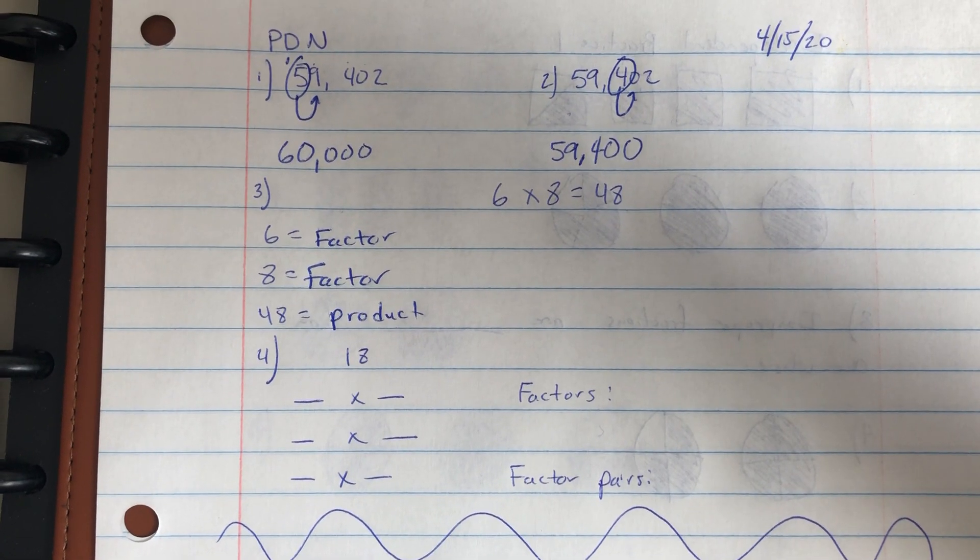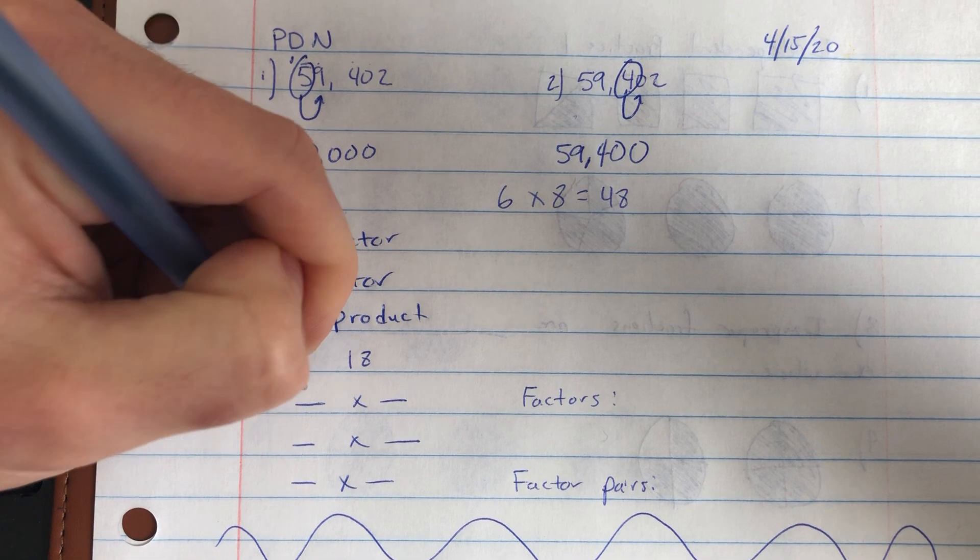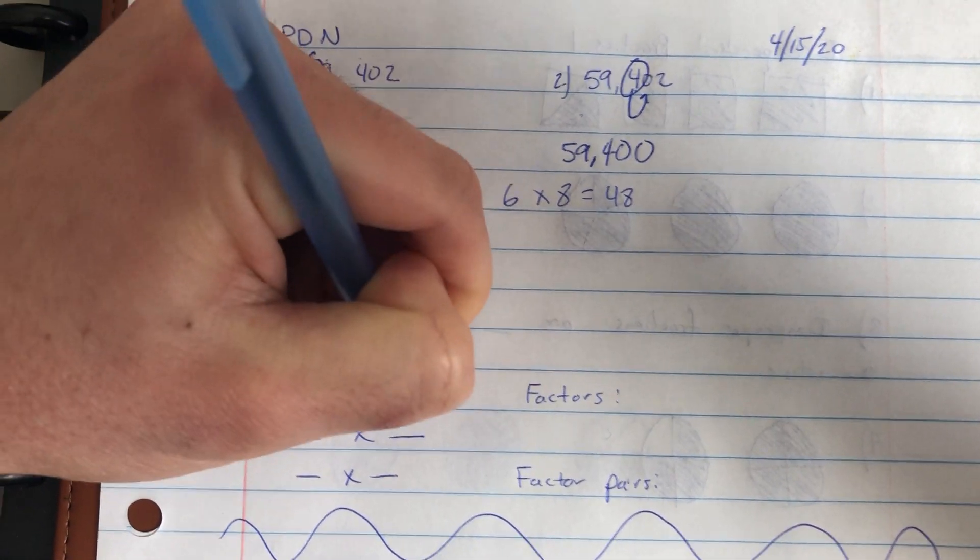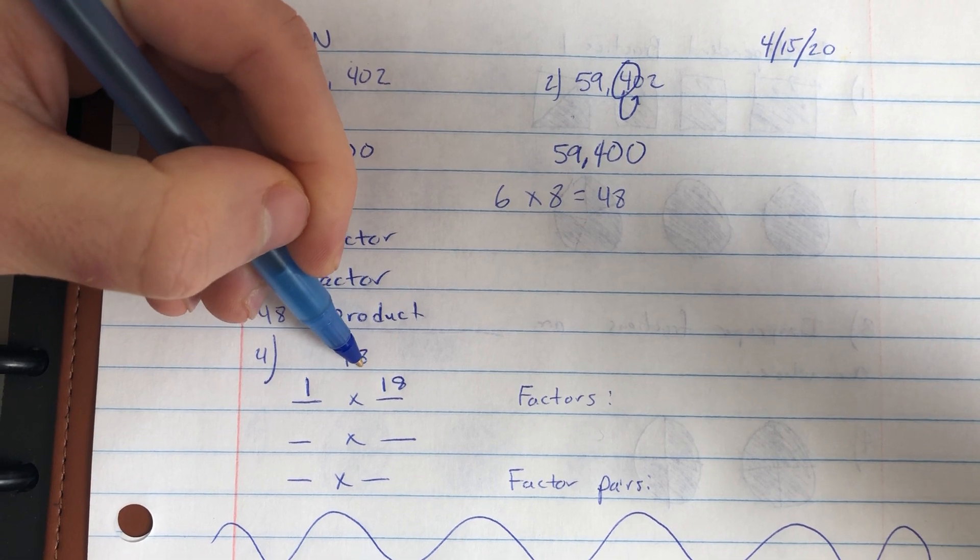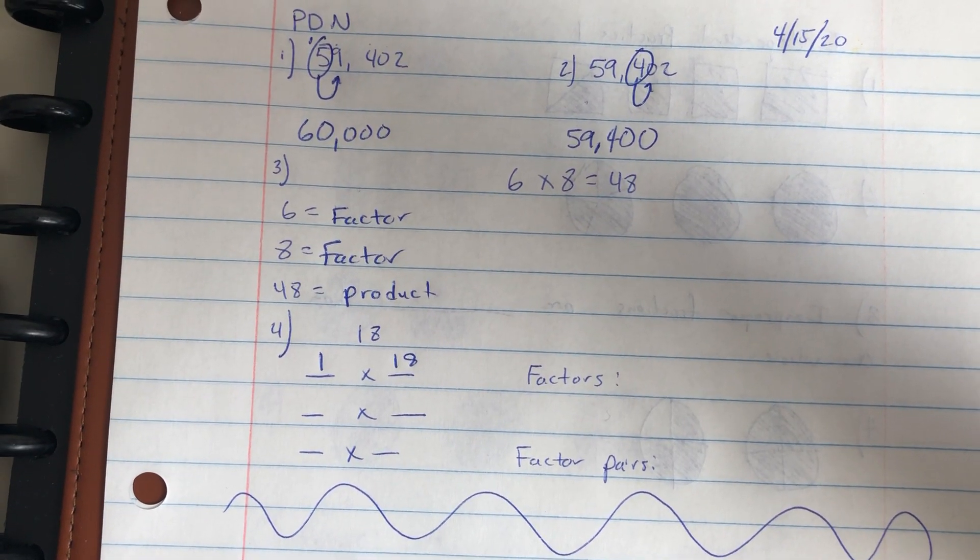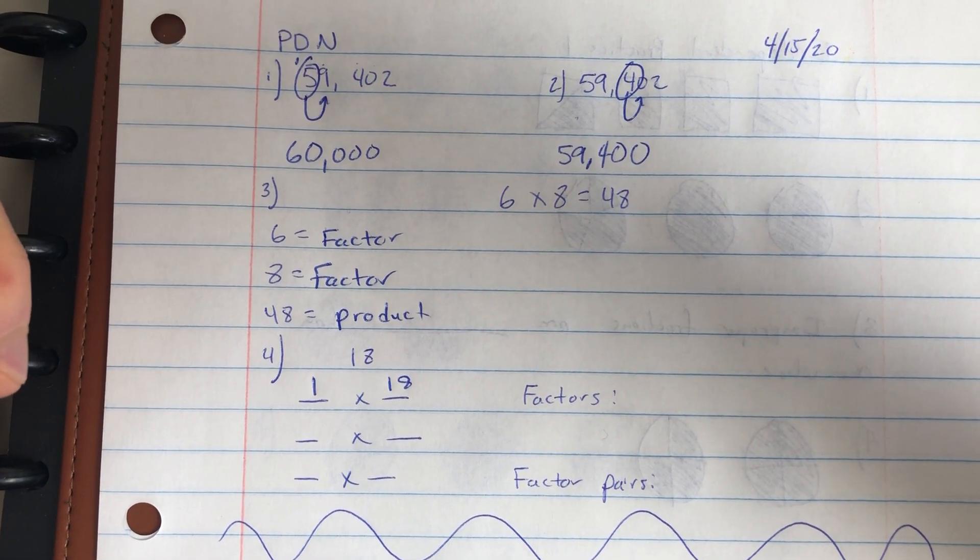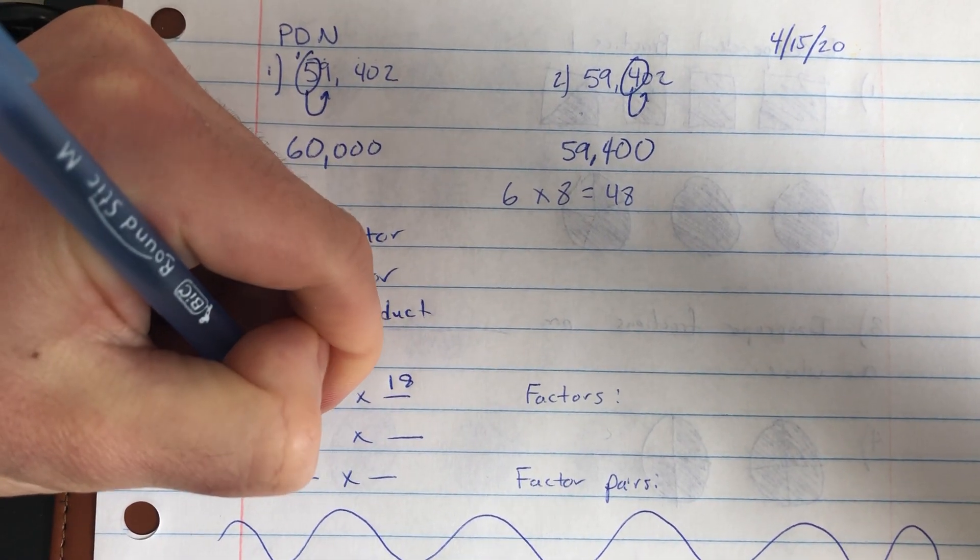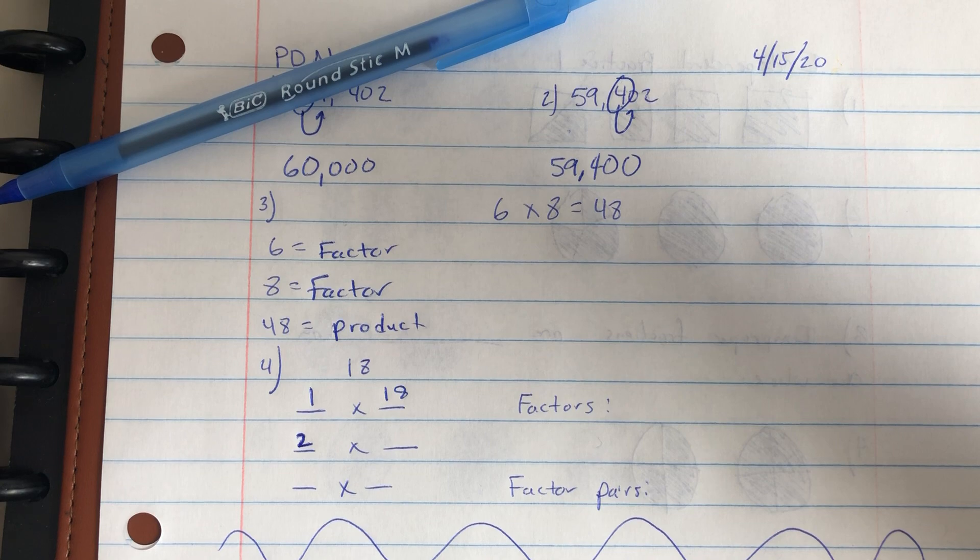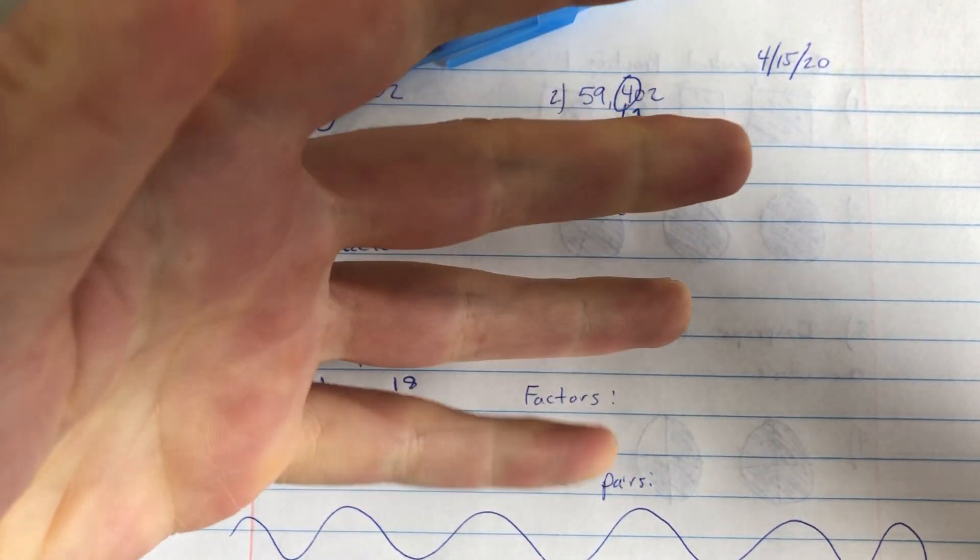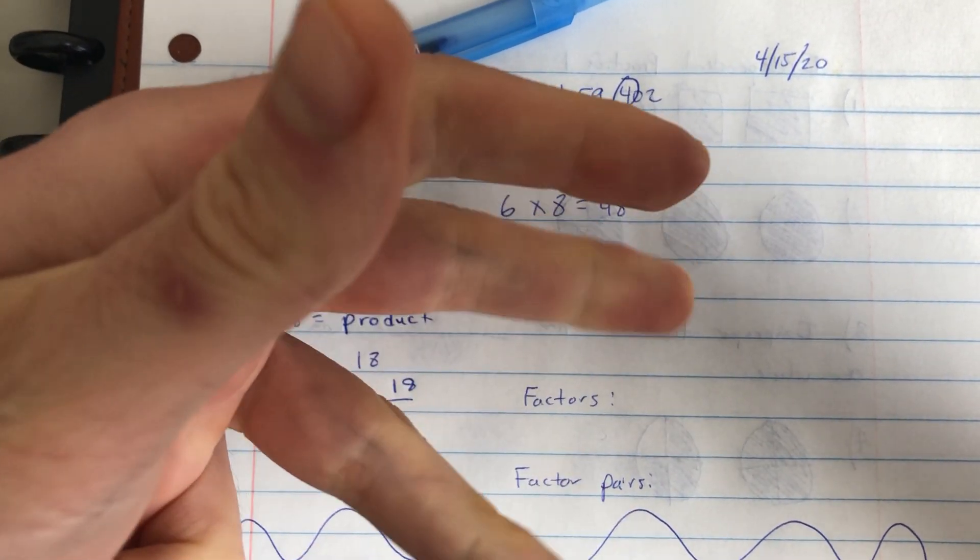I'm now gonna identify the factors and factor pairs for 18. The first factor is one times that number itself times 18. I know I can divide 18 by 2 because I have an eight digit in the ones place. So now I'm gonna roll my twos until I get to 18 to figure out what times 2 equals 18. 2, 4, 6, 8, 10, 12, 14, 16, 18.